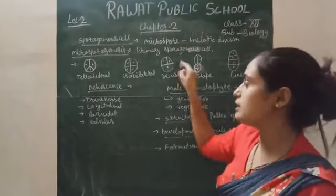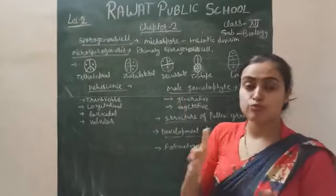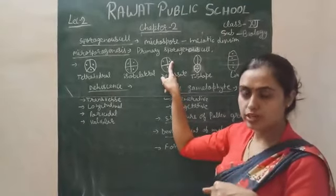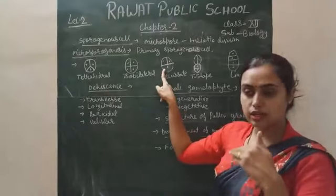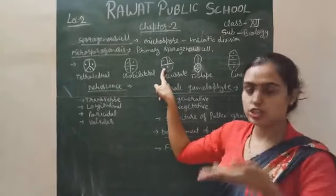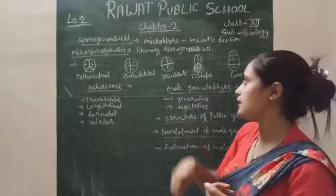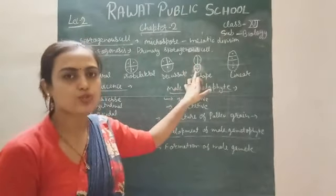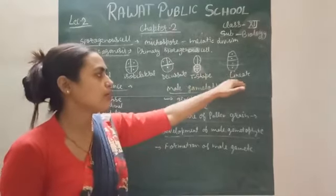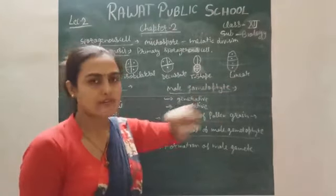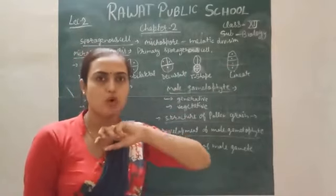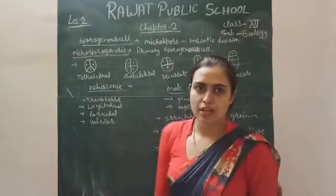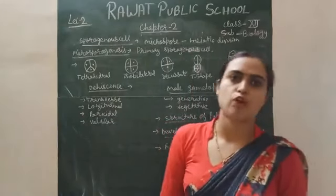Next is the decussate type, where two microspores are perpendicular to each other — two are vertical to each other on the front side and two are transverse to each other. Next is the T-shape, where two microspores show longitudinal division and two show transverse division. And lastly, the linear type, where all microspores are divided in a linear manner in the same line. These are the different arrangements of microspores after meiotic division from the microspore mother cell.